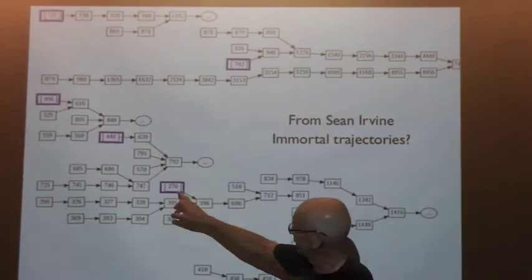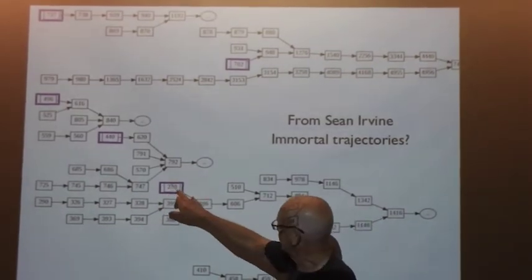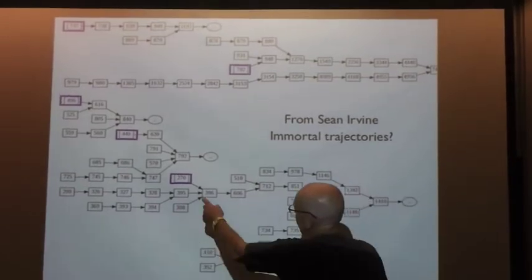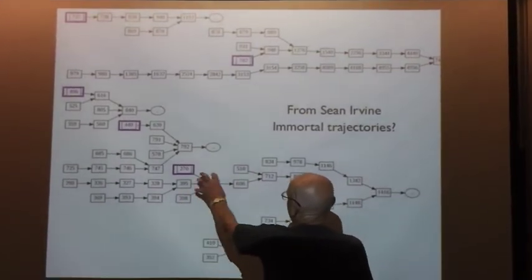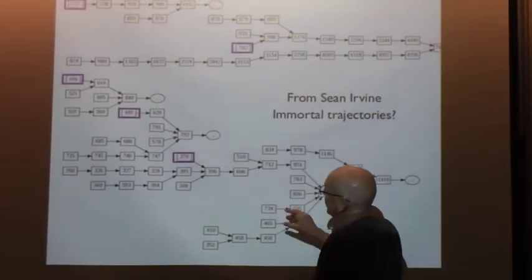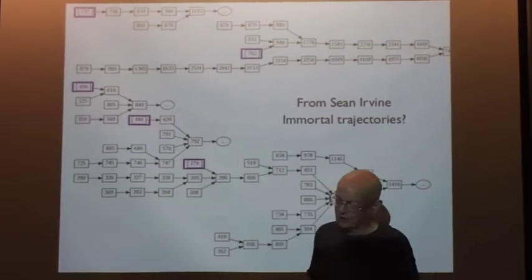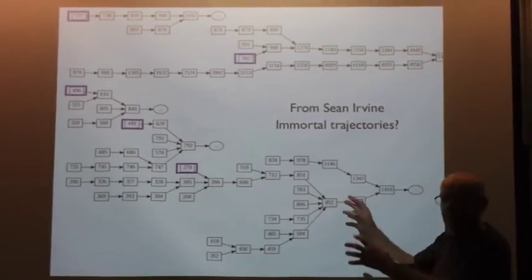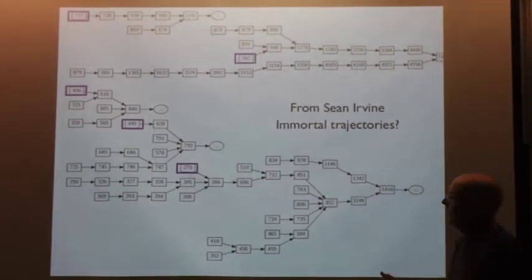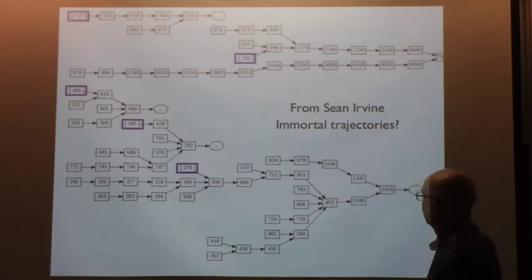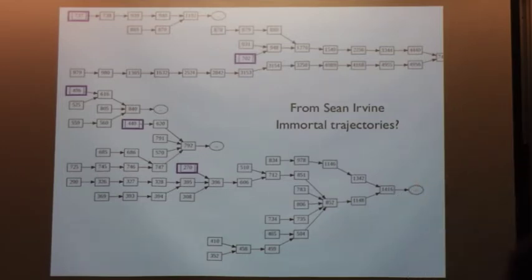270 is the first. It starts here and keeps going. Other ones merge with it. Others seem to be distinct. But it's possible that they merge later on, or it's possible they die after a while. We don't know.